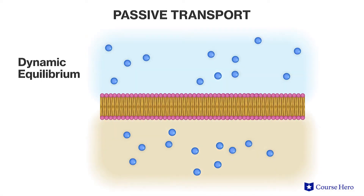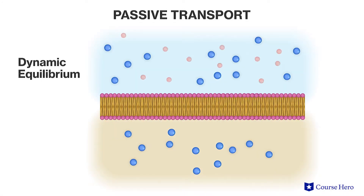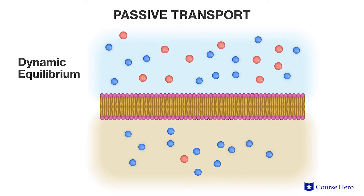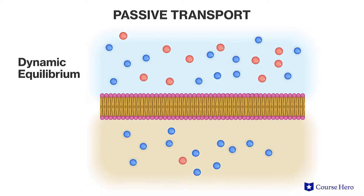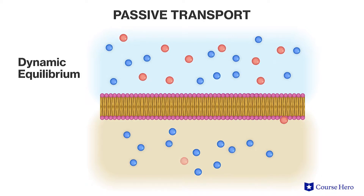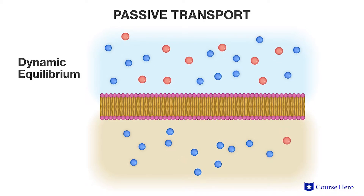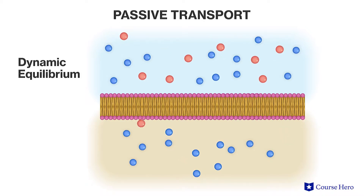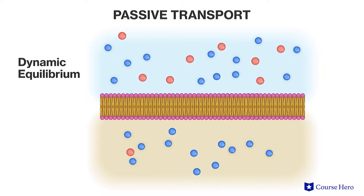For example, the constant movement of oxygen into cells is achieved because the cells use the oxygen continuously, maintaining a sharp deficit inside the cell.